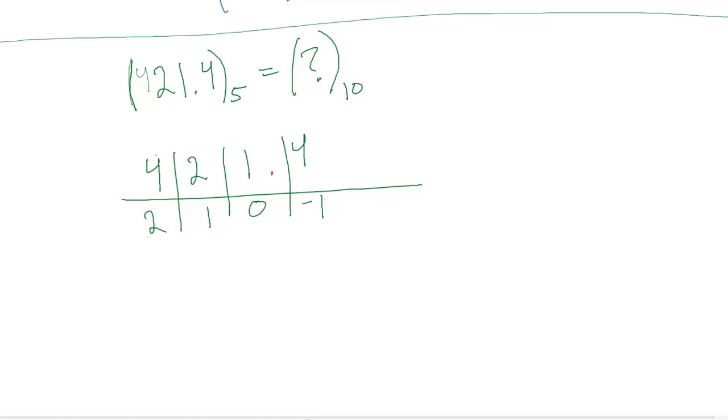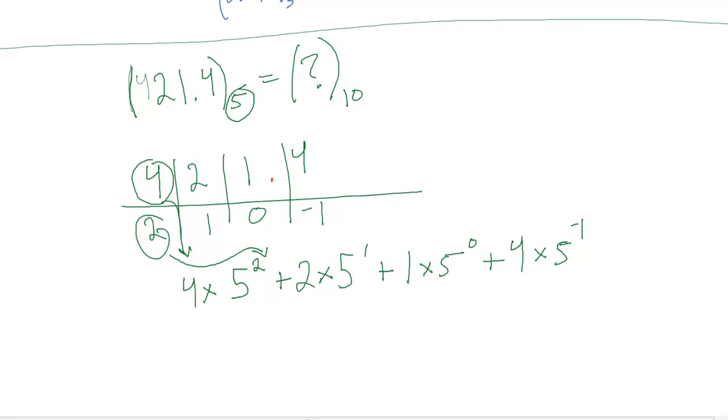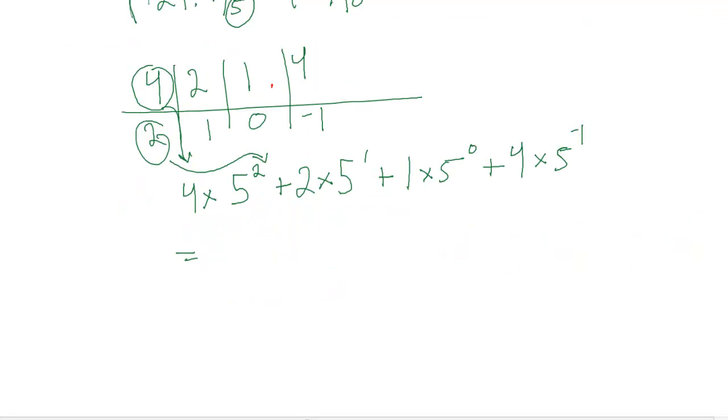So then we're going to start on the left side, let's take this number, bring it down 4 times our base, which in this case is 5, to this number here, bring that out, and we'll keep doing that for each digit. So this one is 2 times our base 5, times our place 1, plus 1, times our base 5, plus our place 0, plus 4, times our base 5, times our place negative 1.